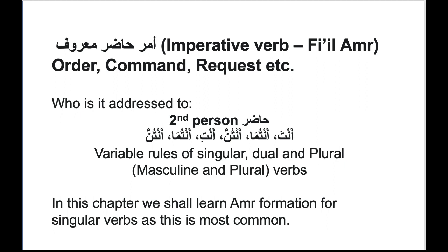Naturally, these six pronouns, or damir, are who the imperative verb is addressed to. The second person hadir pronouns are: anta, antuma, antum, anti, antuma, antunna — you singular male, you dual male, you all male, you singular female, you dual female, and you all female. The amr formation rules vary according to singular, dual, and plural masculine and plural verbs. But in this chapter, we shall only learn amr formation for singular verbs, as this is most common.